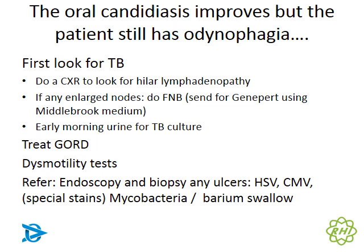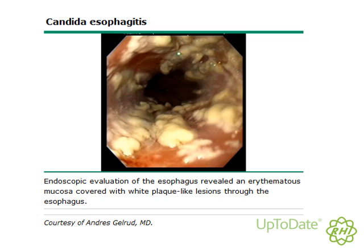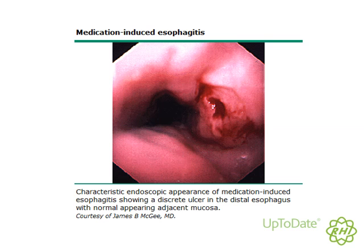Don't wait too long looking for other causes — if TB is excluded and the patient has been treated for reflux but still has problems, refer urgently for endoscopy and biopsy, or organize a barium swallow. Conditions like HSV and CMV ulcerations cannot be diagnosed any other way. On endoscopy, esophageal candidiasis appears as thick, white, flake-like lesions throughout the esophagus. Medication-induced esophagitis shows a distinct ulcer, more in the distal esophagus, caused by agents like doxycycline, NSAIDs, or bisphosphonates.